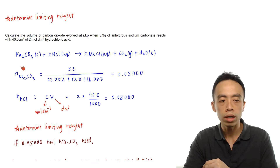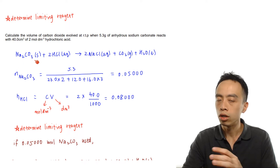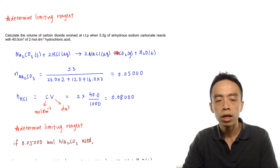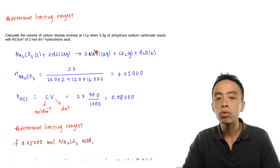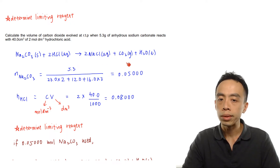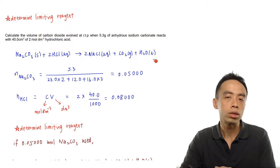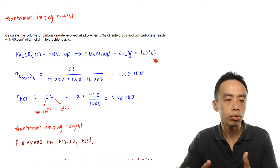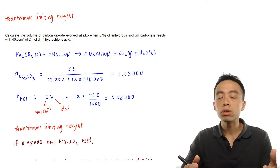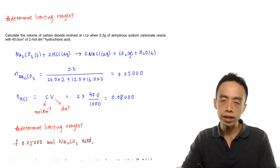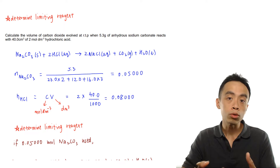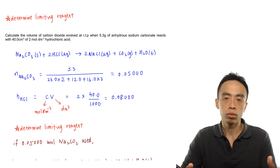The balanced equation is: Na₂CO₃ (solid) + 2HCl → 2NaCl (the salt) + CO₂ (gas) + H₂O. As mentioned, the first thing we must decide is we cannot assume all reactants will be completely used up — we have to determine if there is a limiting reagent or if any reactant is in excess.